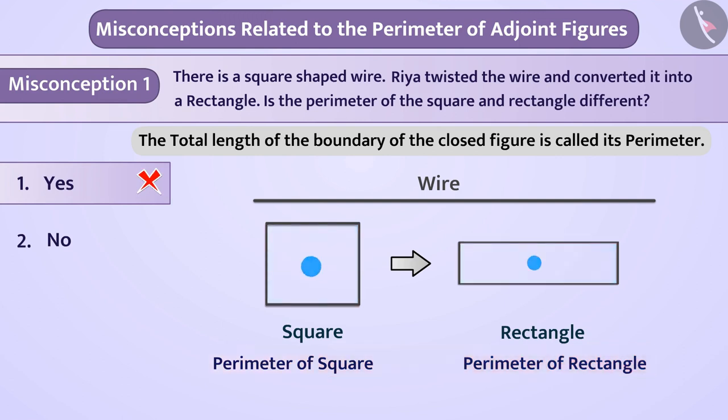Here, the shape of wire is changing but there is no change in the length of the wire. Therefore, the perimeter of both rectangle and square will be same. That is, option 2 is the correct answer.